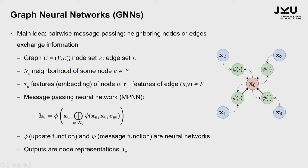Together with the node value itself, there is an update function that computes the next node representation. This update function phi and message function psi are neural nets that need to be trained.